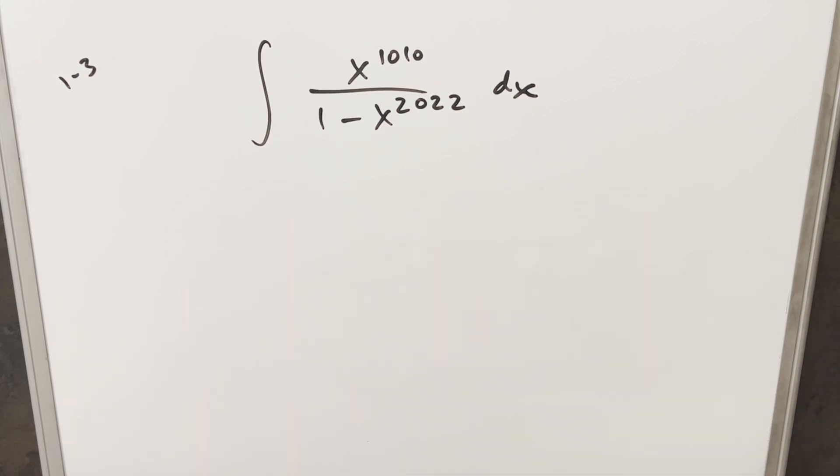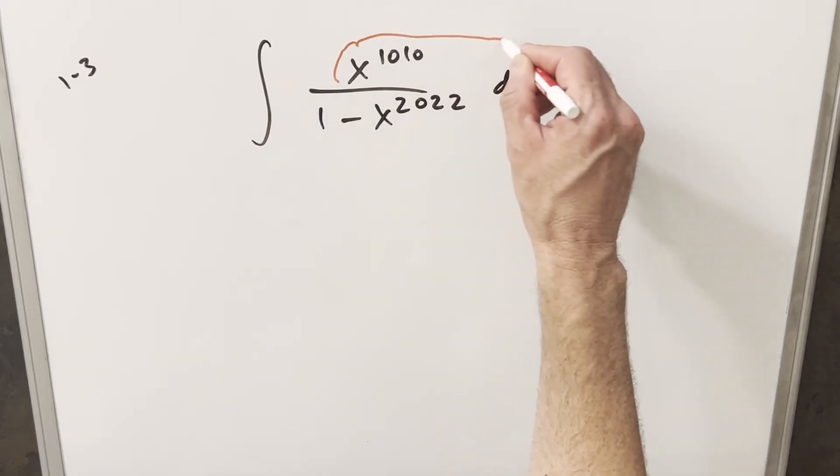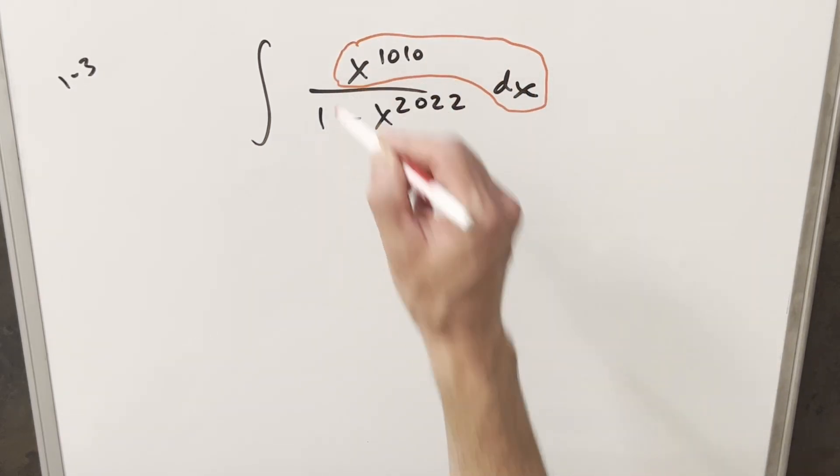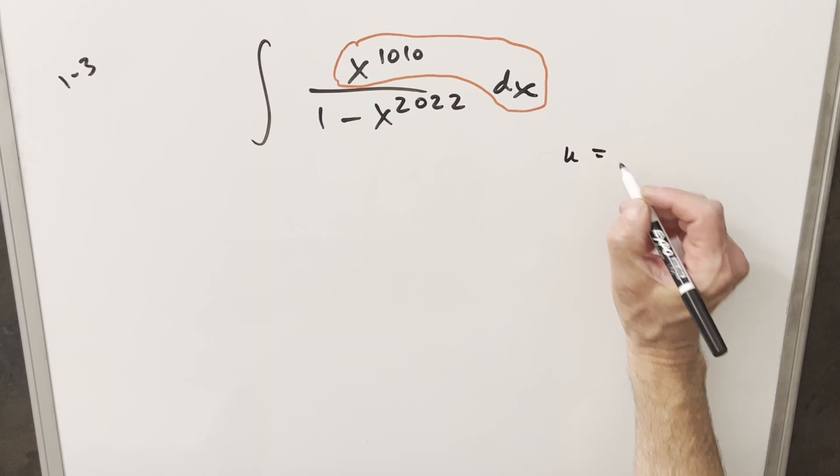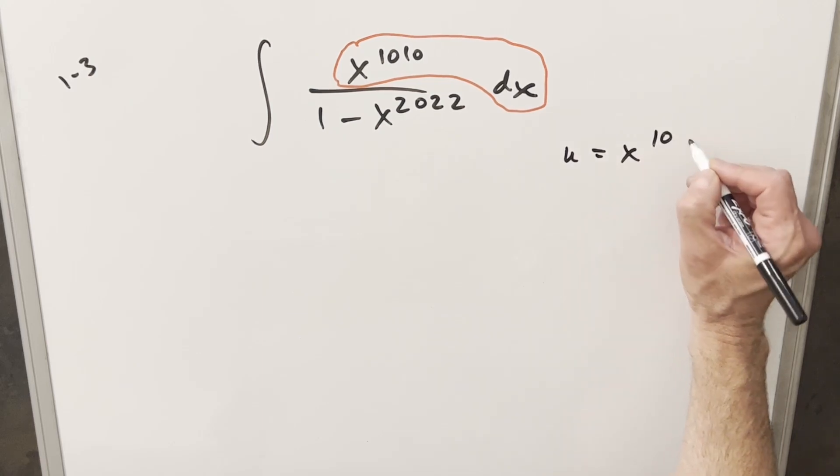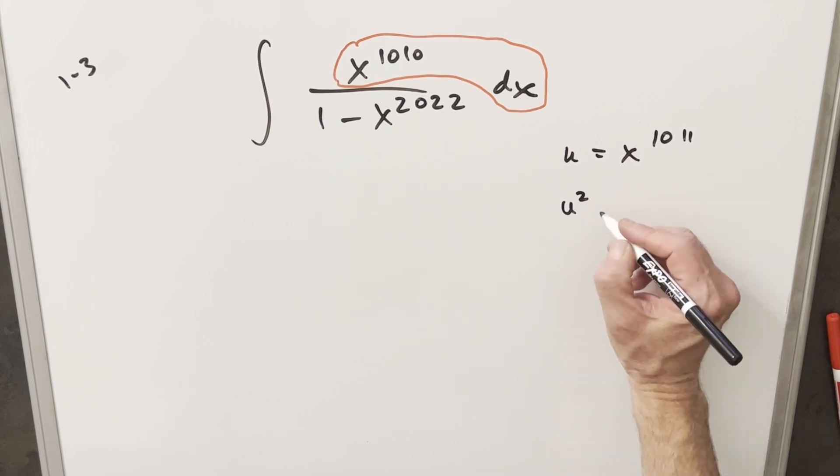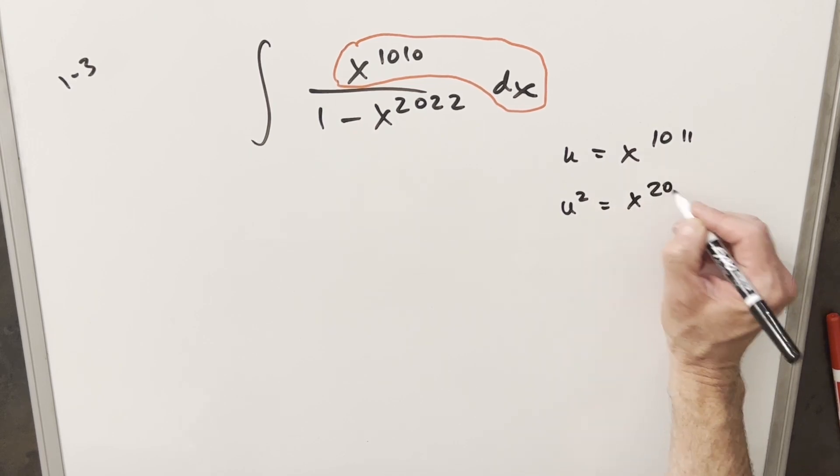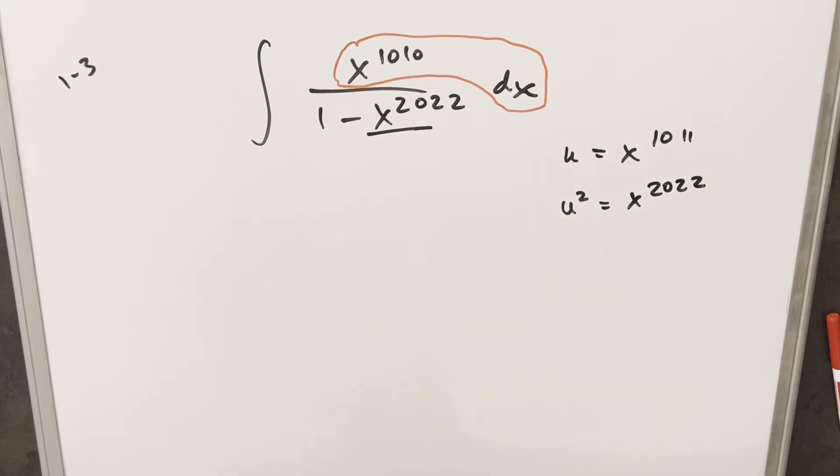Okay, this looks like a problem where we definitely want to do a u-substitution, and what I want to happen is I just want this numerator to be my du or something like it. Now, the only trouble is if I made my u-substitution for this whole thing, or just x to the 2022, the derivative is going to be 2021. So instead, what I want to do is make my u-substitution for x to the 1011. If we look at u squared, it's going to be x to the 2022. That's telling me that this here is going to become u squared, so it's not going to be too bad.